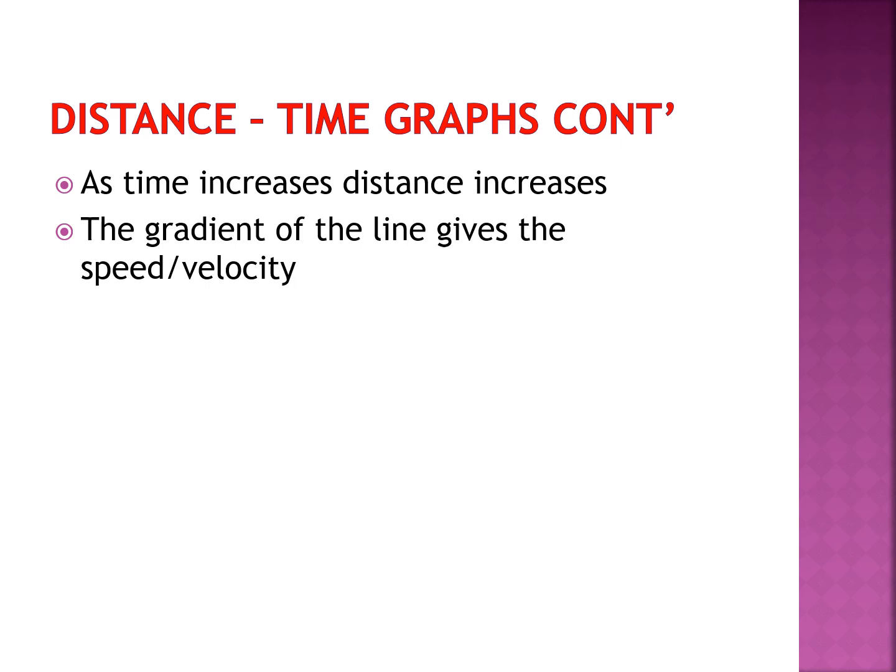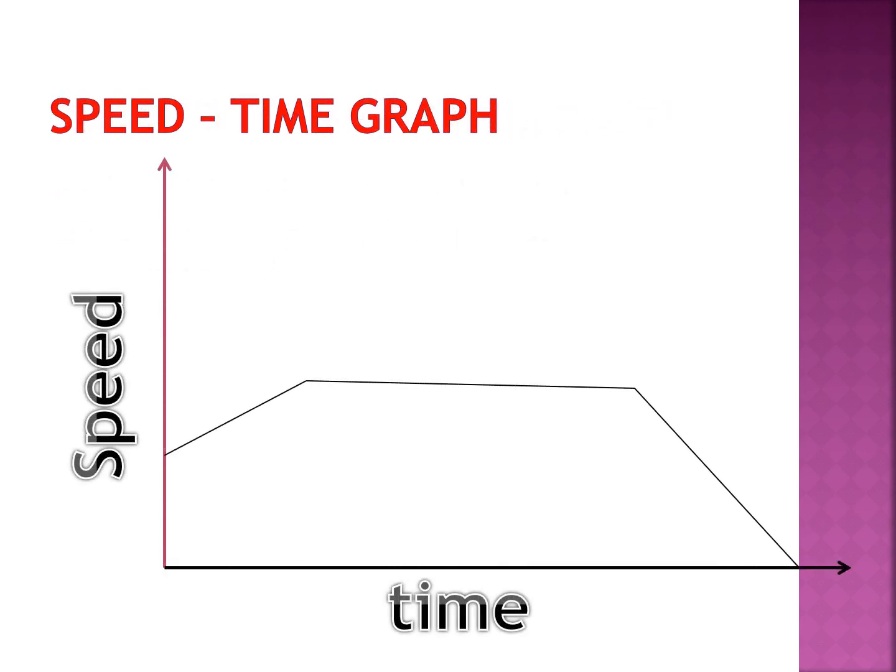The gradient of the distance-time graph is important because it gives you the speed or velocity. Speed is distance over time, so change in distance over change in time is the gradient. The gradient of a line in the distance-time graph gives you the velocity. You can be asked about velocity between two points, so you simply get the gradient within that time interval.